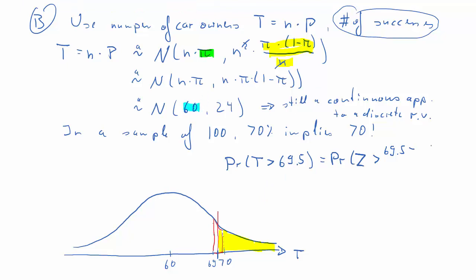And we, again, use our standardization formula to calculate it, because we know T is normally distributed. So, we subtract the expected value of T, and we divide by the square root of the variance. So, we get the probability that Z is larger than, again, a little bit of calculations, 1.94.